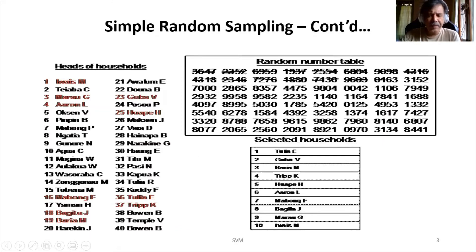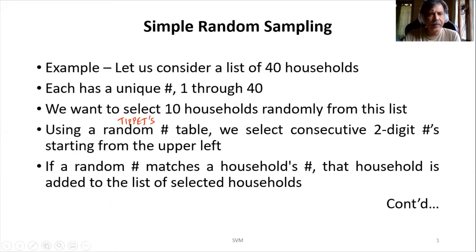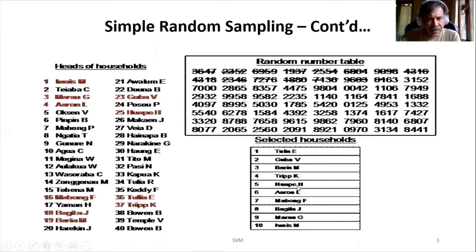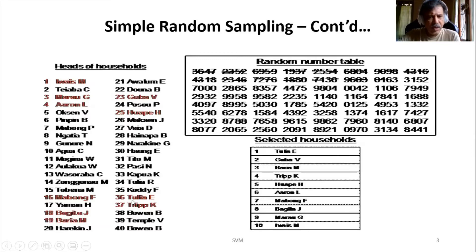From this table we are going to choose numbers sequentially. We select consecutive two-digit numbers starting from the upper left. The first two digits are 36. Is 36 a valid number? Yes, it is valid because the first number is 1 and the last is 40, so 36 falls within that range. Since I got 36, I will choose household 36 — that household is selected.